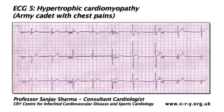There are several abnormalities on this ECG. The ECG shows left axis deviation. There are pathological Q waves in leads 1, AVL, V5 and V6.